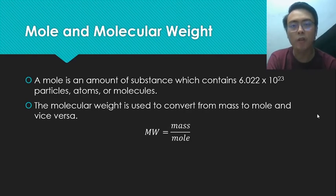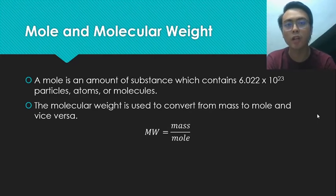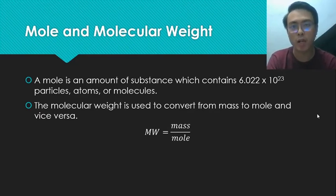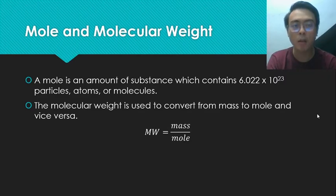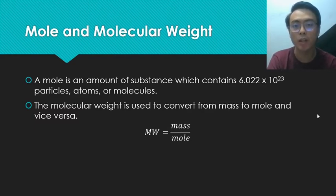Speaking of moles and molecular weights, these allow us to convert from mass to moles and vice versa. The mole and molecular weight concept becomes especially important when dealing with material balance with chemical reactions. Without reactions, you can treat moles the same as mass — conservation of mass means what comes in equals what goes out, and the same holds for moles. But with chemical reactions, the number of moles changes; only mass remains conserved.